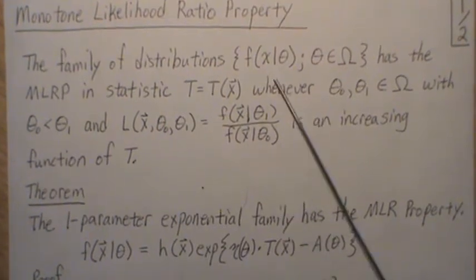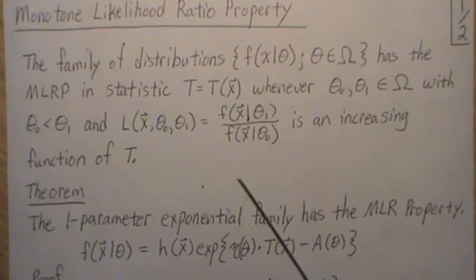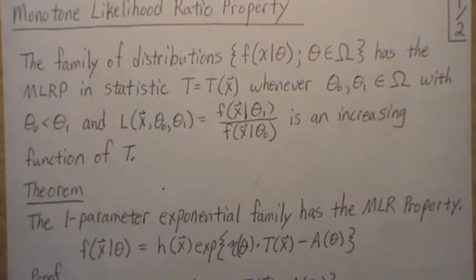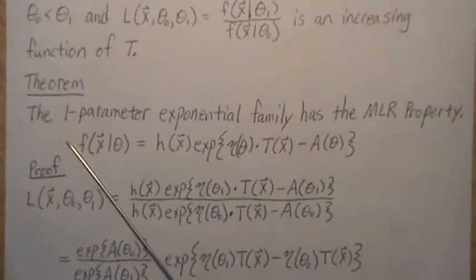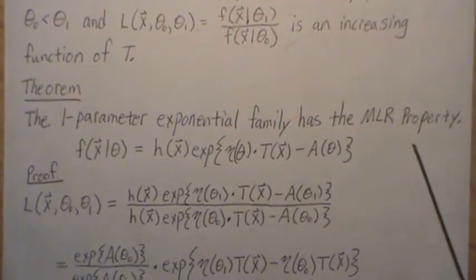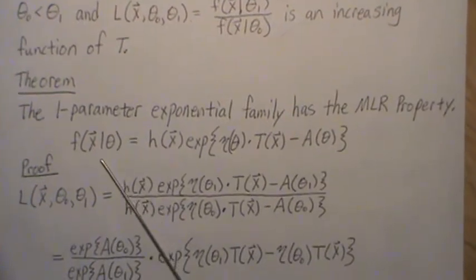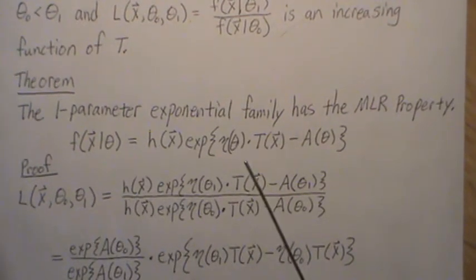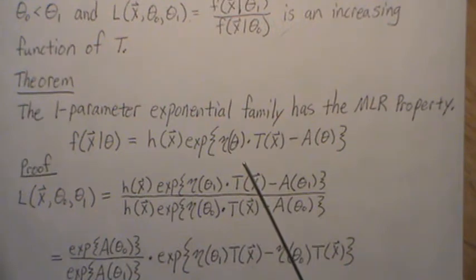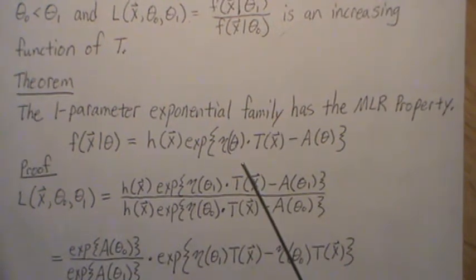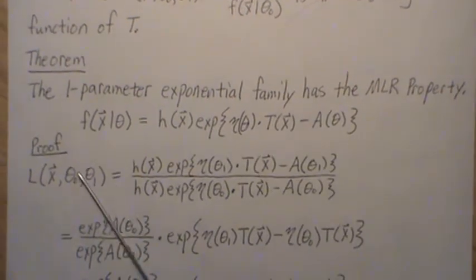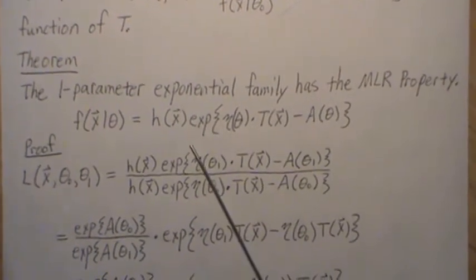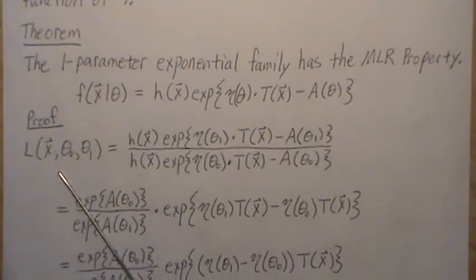In the next video we'll give six or seven examples of how to show that families of distributions have the monotone likelihood ratio property, but in this video we'll keep it more theoretic. Theorem: the one-parameter exponential family has a monotone likelihood ratio property. As a reminder, this is the general form for an exponential family — I have a playlist on exponential families where we derive the mean and variance generically.